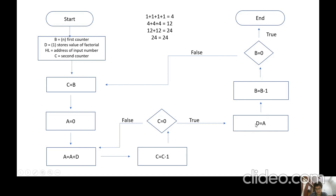Then C becomes zero, D is set to A which is 12, and B is decremented to two. Again the block executes — since C equals B which equals two, the loop runs two times. D, which is 12, is added twice: 12 plus 12 gives 24. Again D is set to 24, B becomes one on decrementing, and for the last time the loop runs once — C is decremented to zero in one round, and D is added once giving 24. Finally D is set to A which is 24.